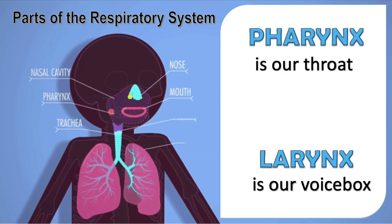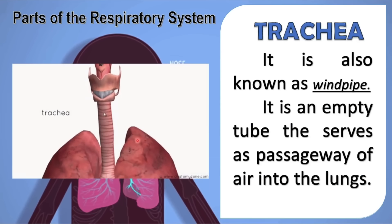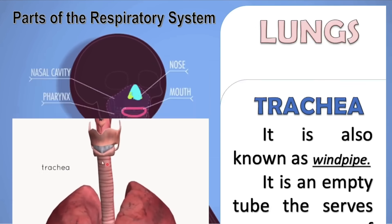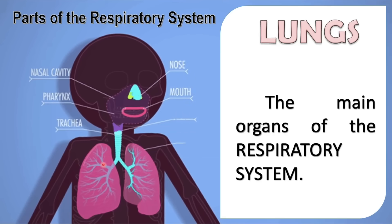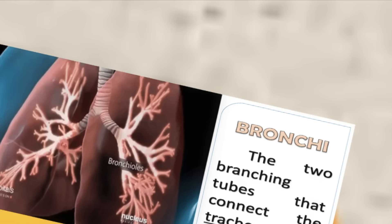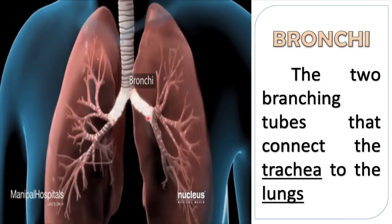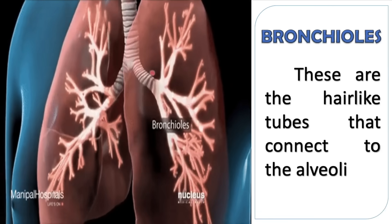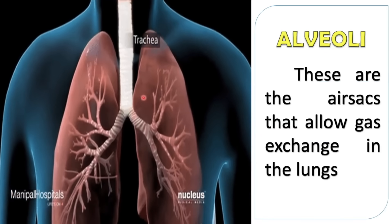Next, the pharynx is our throat and the larynx is our voice box. Next, the trachea is also known as the windpipe. It is an empty tube that serves as a passageway of air into the lungs, as shown in the picture. Next, the lungs are the main organs of the respiratory system. Humans have a pair of lungs — the right and the left. Next, bronchi are the two branching tubes that connect the trachea to the lungs. Next, bronchioles are the hair-like tubes that connect to the alveoli, wherein gas exchange happens.